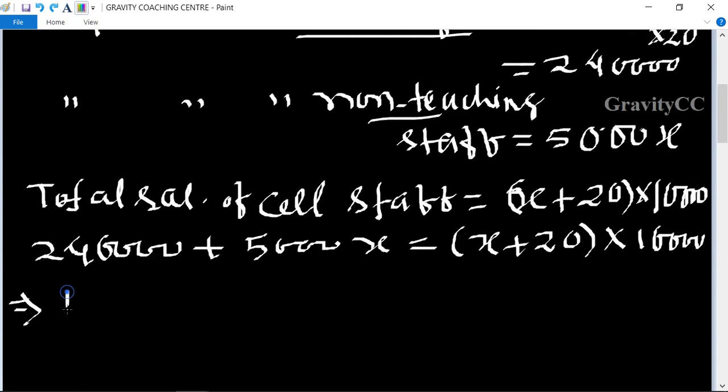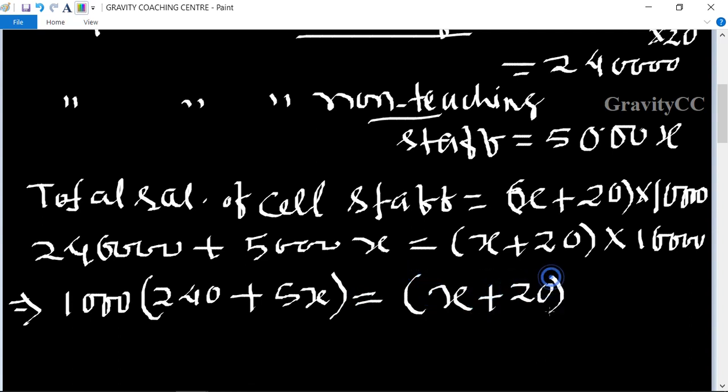Now we take 1,000 as a common, so this will become 240 + 5x equal to (x + 20) × 10.